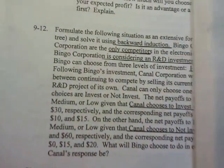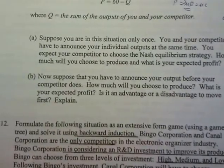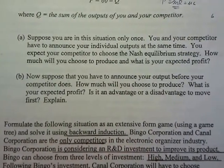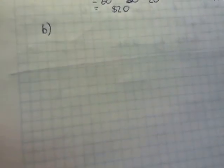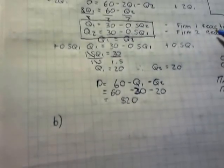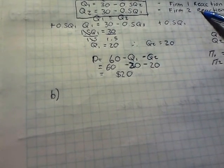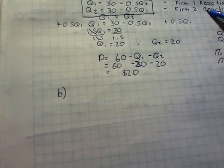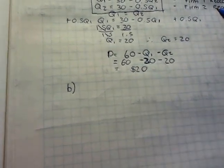Now we're looking at Part B, which says: suppose that you have to announce your output before your competitor does. How much will you choose to produce? What is your expected profit? Is it an advantage or disadvantage to move first? So we're looking at first mover and second mover advantages. Since we are firm 1 and we announce first, firm 2 will react to the output we choose — not the other way around.